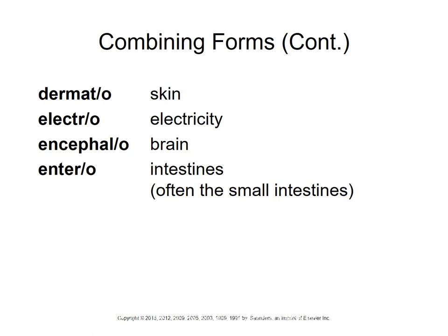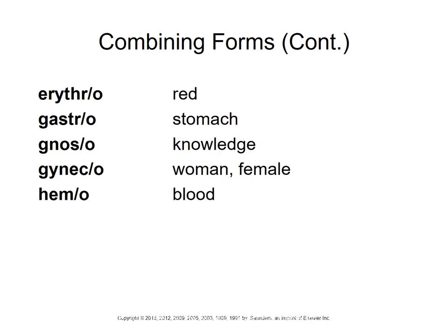More combining forms: 'dermato' means skin, 'electro' means electricity, 'encephalo' is your brain, and 'entero' means intestine — often used specifically for the small intestine. 'Erythro' means red, as in erythrocyte — 'cyto' is cell, so erythrocyte is a red blood cell. 'Gastro' is stomach.